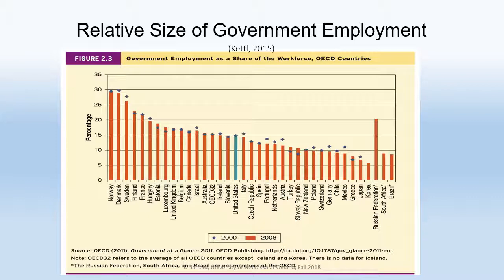Let me tackle the relative size of government employment. This chart compares government employment as a share of the entire workforce by percent across OECD countries — the Organization for Economic Cooperation and Development. The United States ends up right in the middle with about 15 percent government employment as a share of the workforce. Not necessarily small, but nowhere near many European countries, which have a much larger percentage of their population as a share of the workforce.